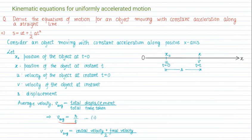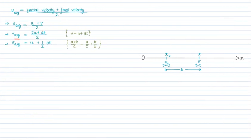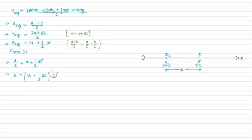From Equation 1, average velocity equals s/t. So I can write s/t equals u + ½at. Cross-multiplying t to the other side gives s equals (u + ½at) multiplied by t. Opening the bracket: u times t plus ½at times t, which gives the displacement-time relation: s = ut + ½at².